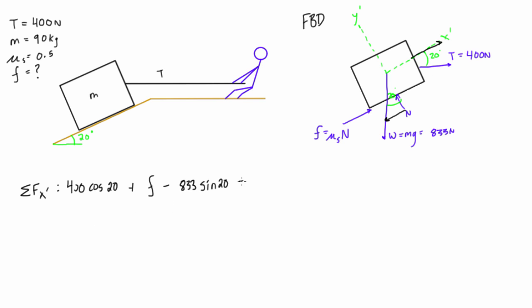Alright, that's the component in the x prime direction. So, we said this is in static equilibrium, so that's all equal to zero. So we basically just get, this is 376 plus f minus, this guy works out to be about 302. And that's all equal to zero. And at the end of the day, that's going to give us our force of friction here. It's going to be, well, 302 minus 376. So, that'll be negative 74 newtons.